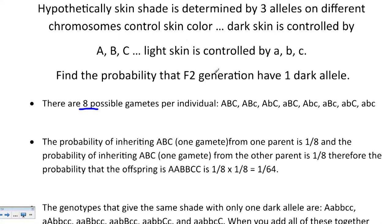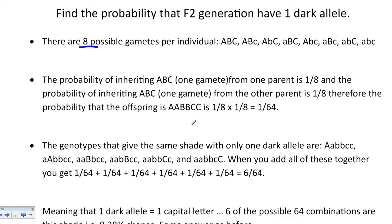We still want to know the probability that the F2 will have one dark allele. The probability of inheriting any particular gamete from one parent is one eighth — one out of eight chances. Each gamete is independent, so the probability that an offspring is homozygous dominant is one eighth times one eighth, which is one sixty-fourth.